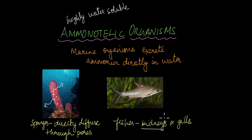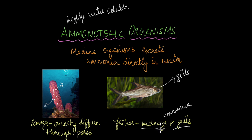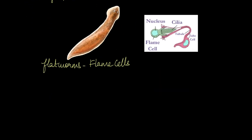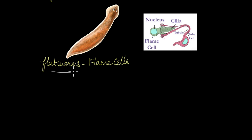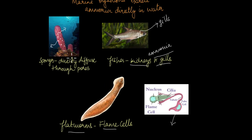Fish have kidneys that separate ammonia from the blood, but the ammonia is eventually excreted out through their gills — the same structures used for gas exchange. Fish have a simpler form of kidneys than we do, but it is in those kidneys that ammonia is filtered from the blood. Flatworms are also ammonotelic; they have special structures known as flame cells where ammonia concentrates and is then pushed out through tube cells.